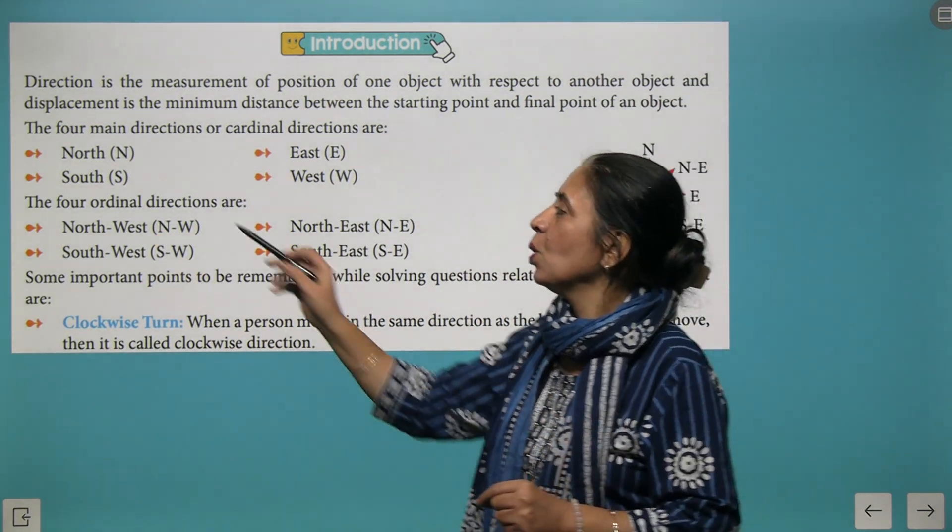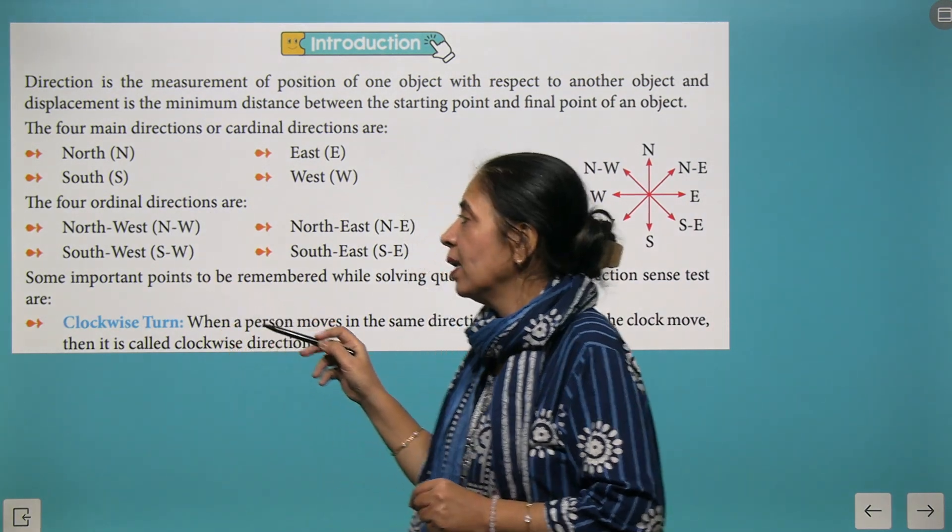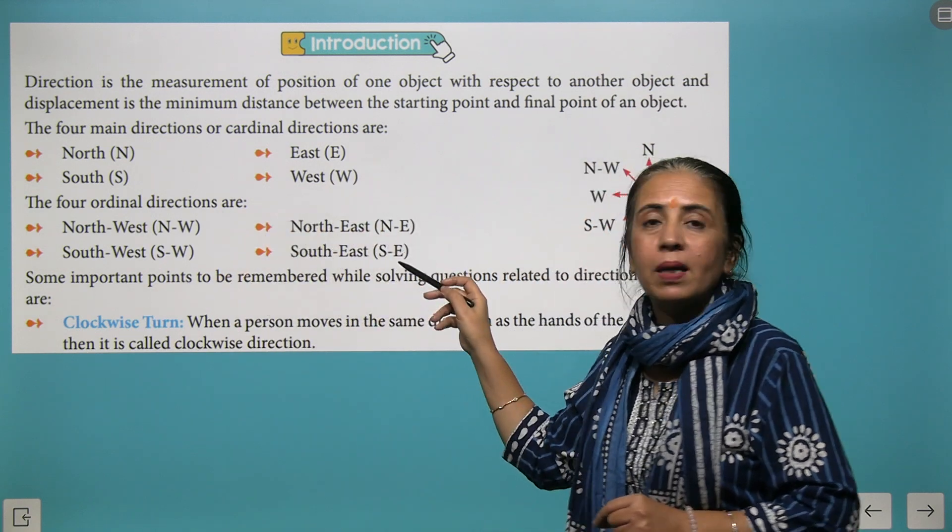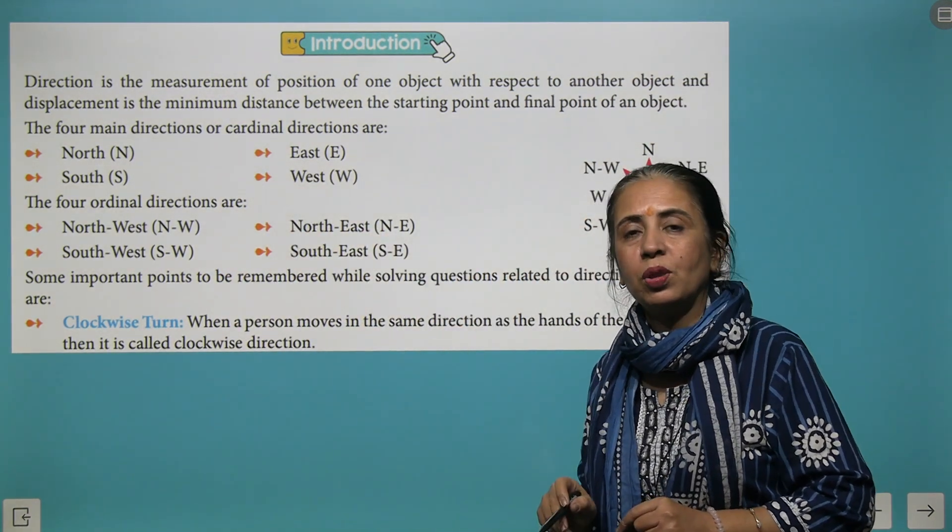When you talk about ordinal directions, we have four more directions. One is between North and West, that is Northwest. Another is between South and West, we call it Southwest. Similarly Northeast and Southeast.